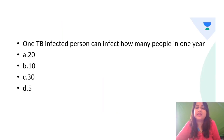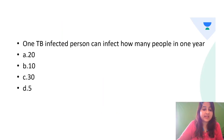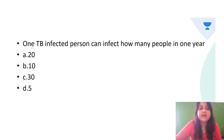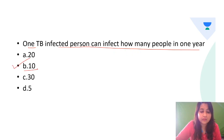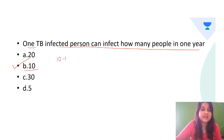So let us start with the MCQs for the day. The first question is just a small understanding of this topic: one TB infected person can infect how many people in one year? Is it 20, 10, 30 or 5? The correct answer is 10. Every TB sputum-positive patient can infect 10 to 15 individuals in a year.